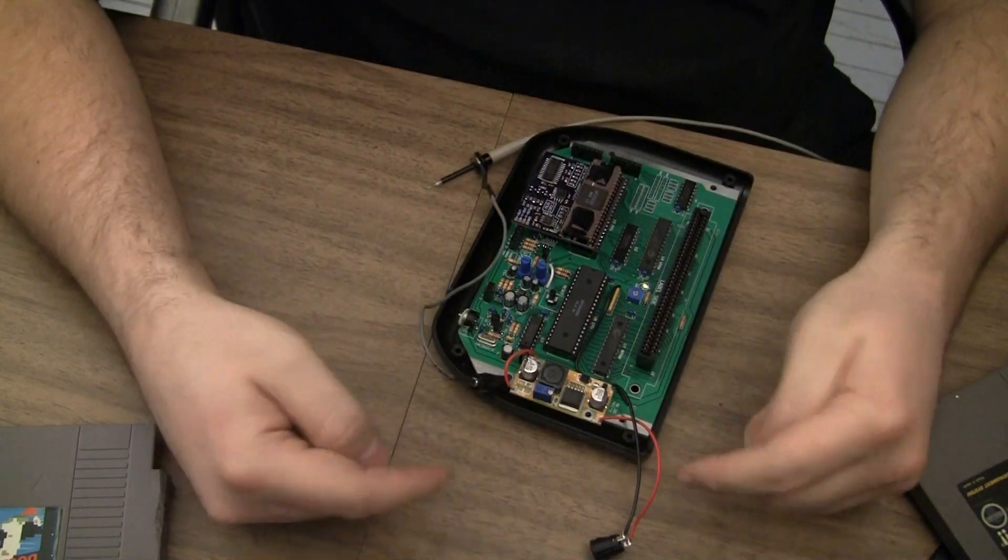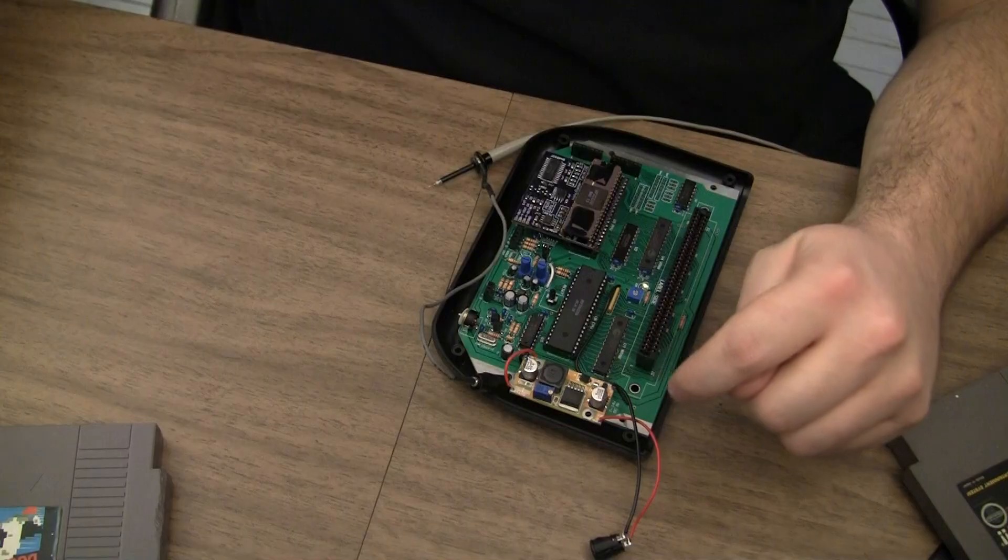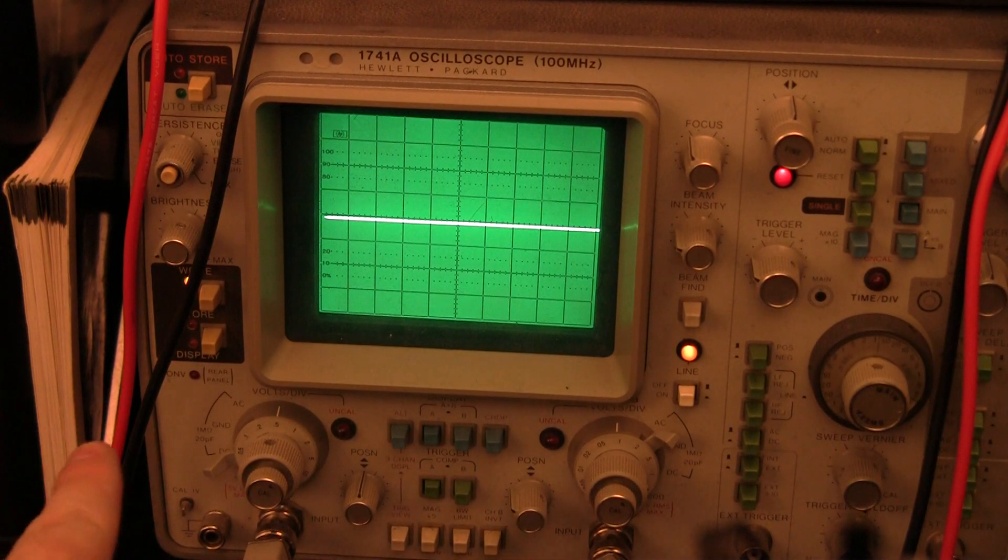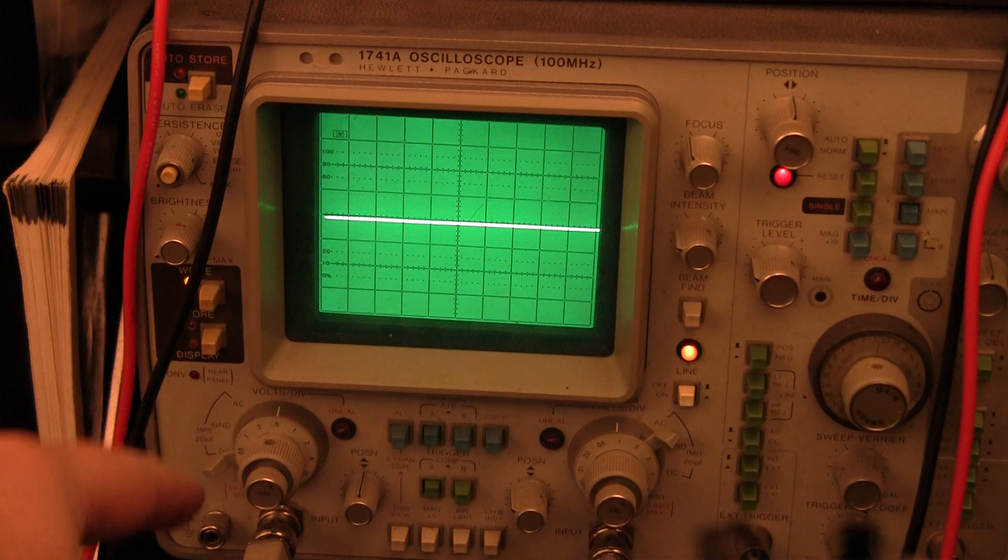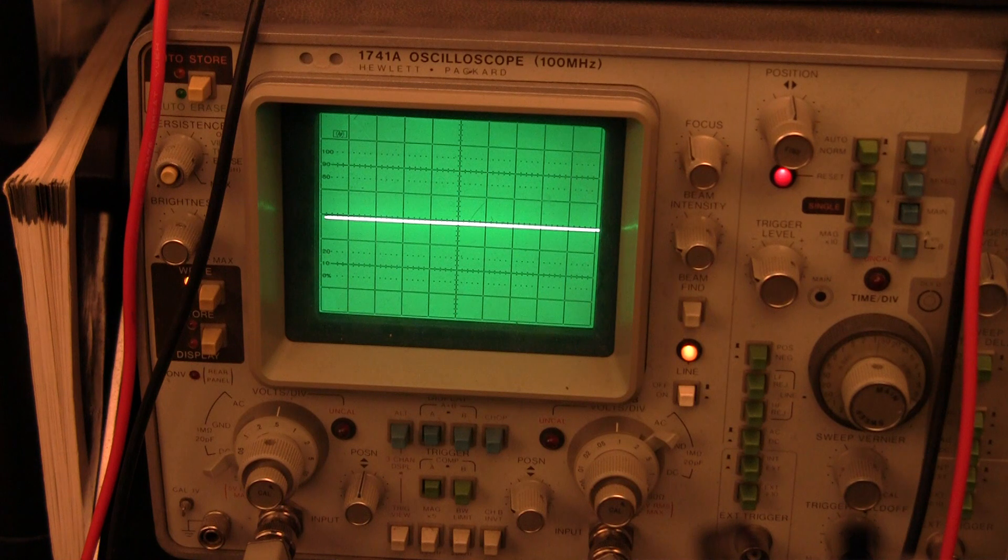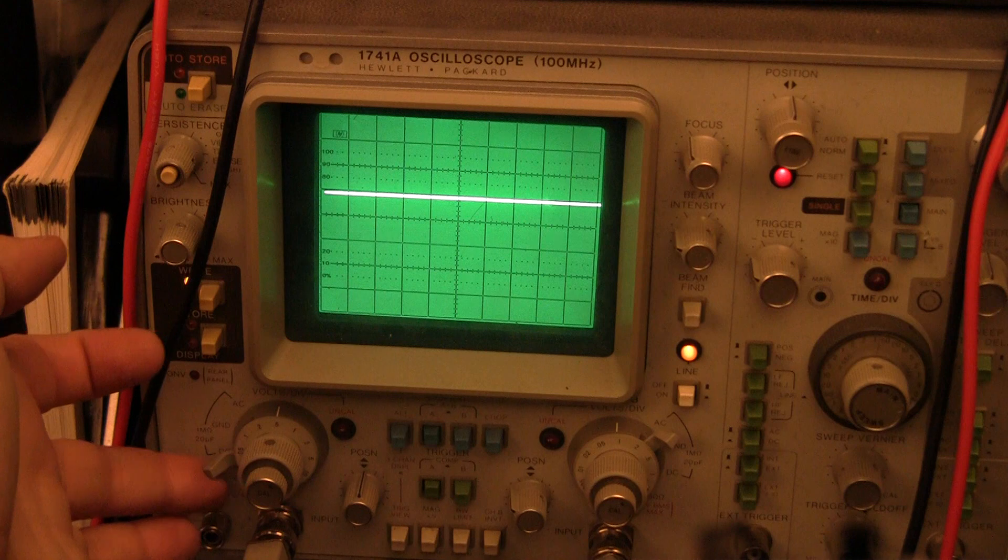So I'll plug it in and then show you the oscilloscope. Okay, I've still got it hooked up with component out. It's on DC and the smallest time division. It's 5 volts.